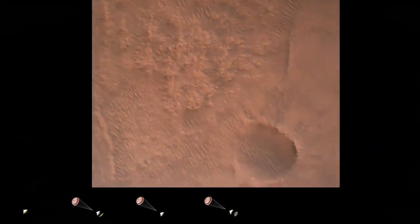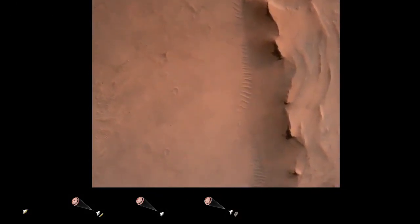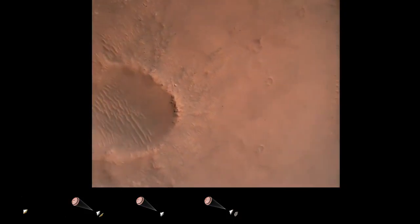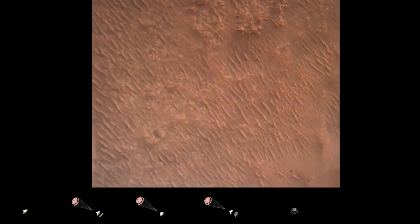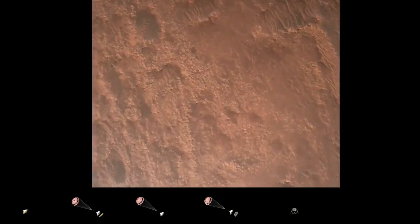Back shell separated. Current velocity is 83 meters per second at about 2.6 kilometers from the surface of Mars. We have confirmation that the back shell has separated. We are currently performing the divert maneuver. Current velocity is about 75 meters per second at an altitude of about a kilometer off the surface of Mars.